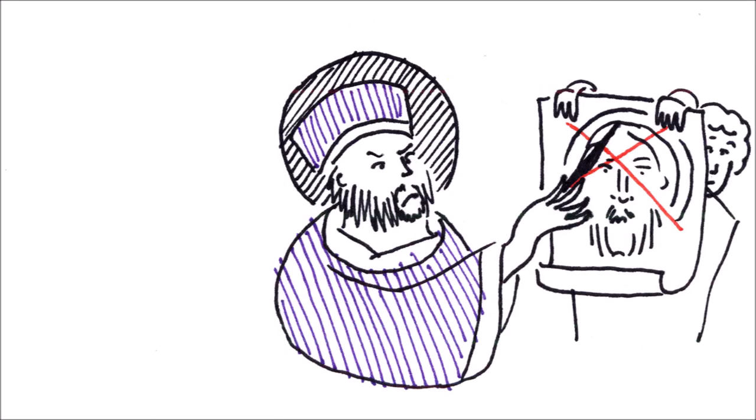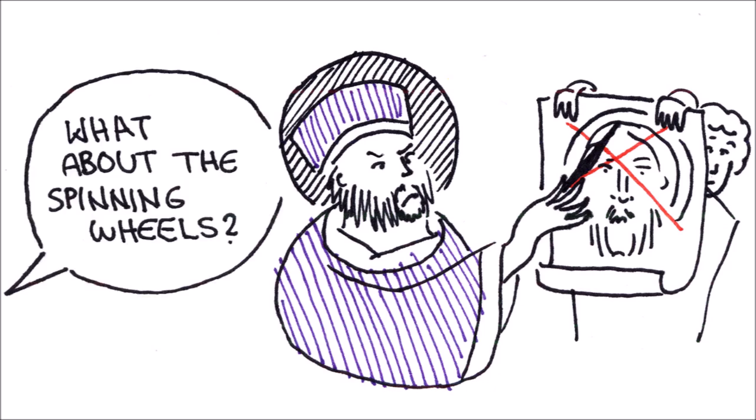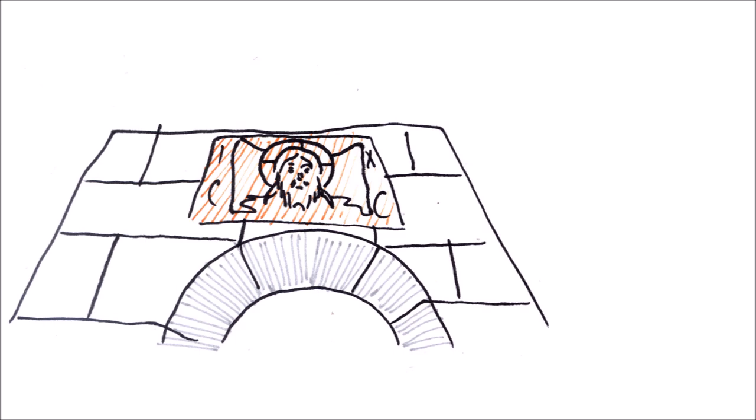When Leo the Isaurian ascended the imperial throne, he issued an edict to destroy holy icons everywhere. Above the bronze gates at Constantinople was a bronze icon of the Savior, which had been there for more than 400 years.